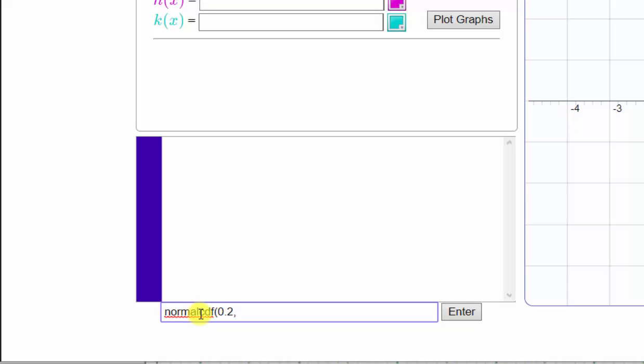For the upper bound, I'm going to exaggerate and enter 99,999. And because we have z-scores, the mean is 0 and the standard deviation is 1. So we can leave the mean and standard deviation off. Type in close parenthesis and click enter.